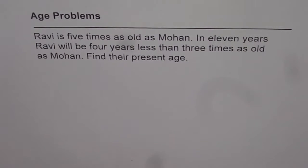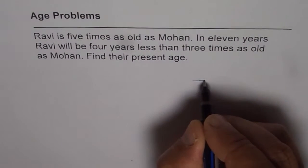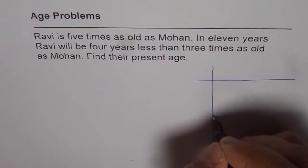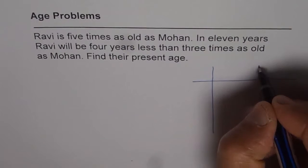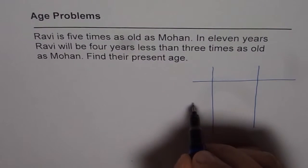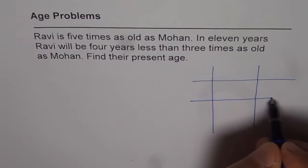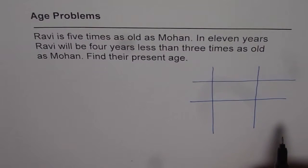To solve such questions, we should make a table and then work out the equations. So we have two characters here — one is Ravi and the other one is Mohan. We know some relations between them as far as their age is concerned, for their present age and the age after 11 years.